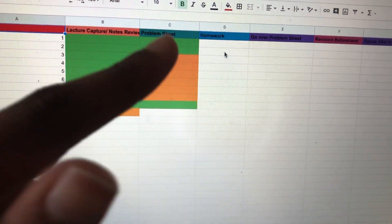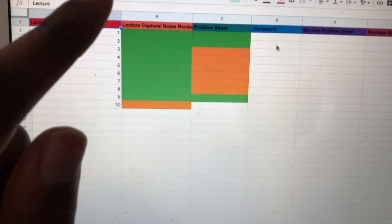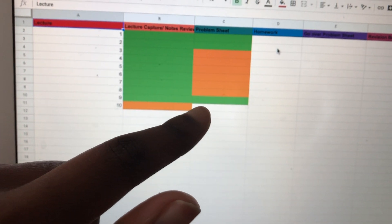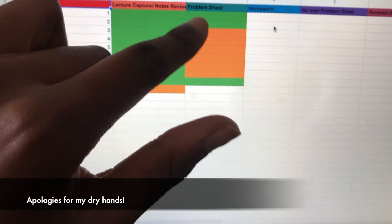As you can see, everything that's in green means that I've done the work, I've revised it, and I've done the question. Everything that's in orange means I haven't finished, and if it's blank I haven't attempted it.